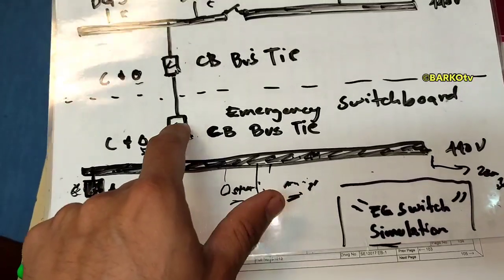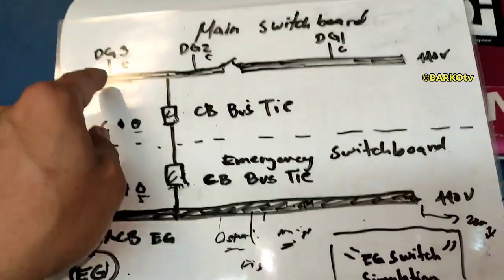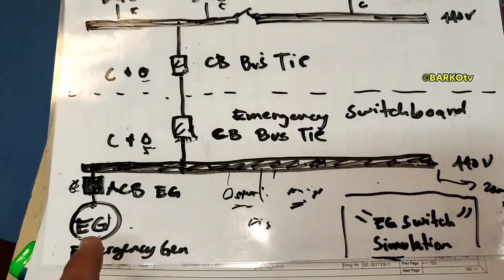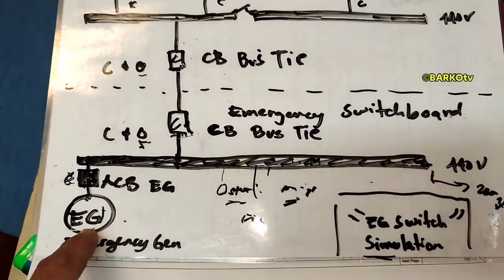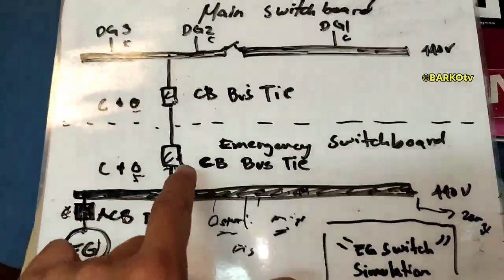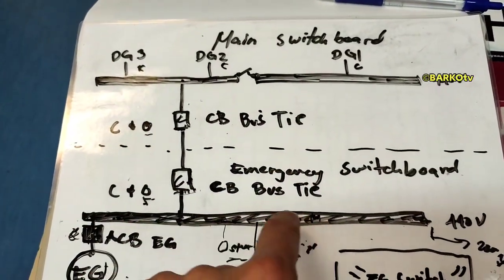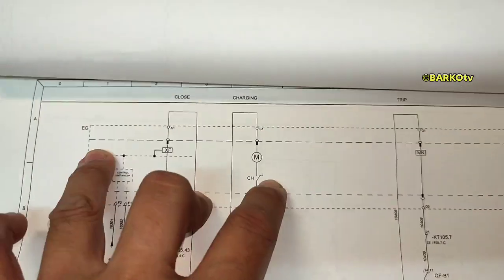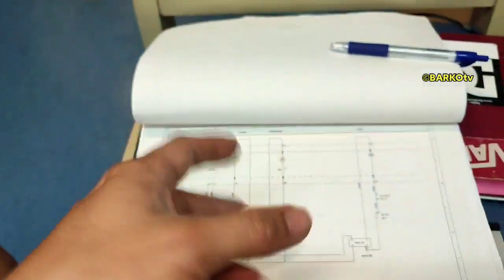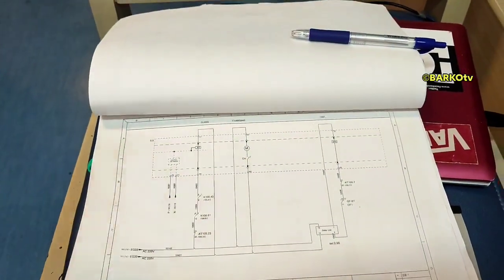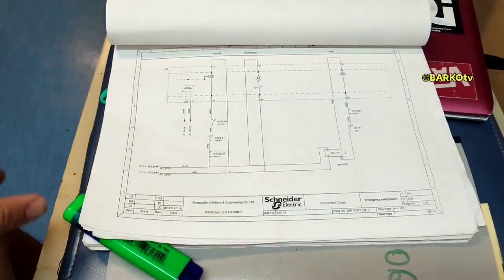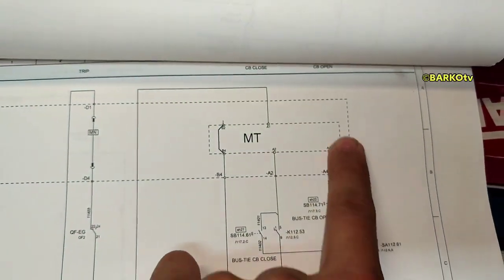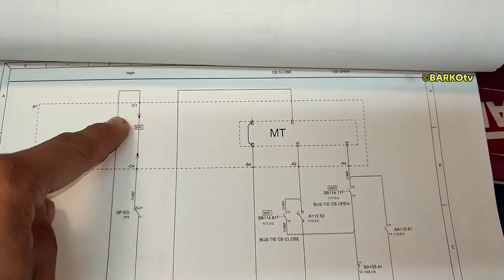If the emergency generator is supplying the bus bar, you cannot open or close the bus tie because it is prohibited to supply the main switchboard to the emergency switchboard while the emergency generator is running. You need to turn off or open the emergency generator breaker before you can switch supply back to the main switchboard. There is a charging motor and this is the solenoid trip for the ACB — the emergency generator ACB. We have separate videos about ACB metasol breakers and draw-outs. This Schneider breaker follows the same process, and this is the CB close and CB open command — the solenoid coil trips the breaker.